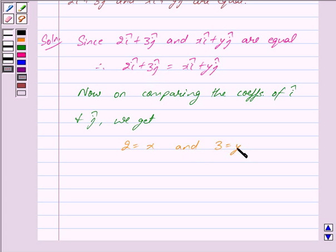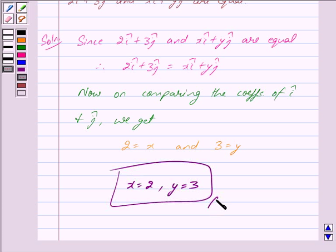We have 3 is equal to y. Hence, we get our answer as x is equal to 2 and y is equal to 3. Hope you have understood the solution. Bye and take care.